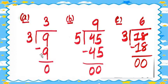Question 2c: 18 divided by 3. In the table of 3: three ones are 3, three twos are 6, three threes are 9, three fours are 12, three fives are 15, three sixes are 18. We've reached three sixes are 18. So the quotient is 6.